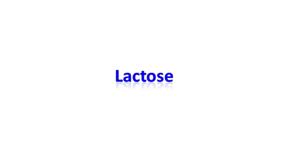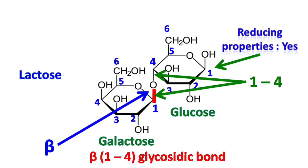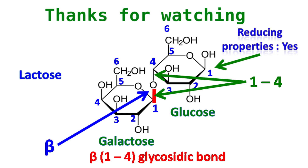Lactose is commonly known as milk sugar. Lactose is formed by galactose and glucose linked together by a beta 1-4 glycosidic bond. In lactose, the glucose still has a free aldehyde group; hence lactose is a reducing sugar.